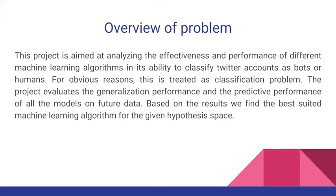The overview of the problem: this project is aimed at analyzing the effectiveness and the performance of different machine learning algorithms in their ability to classify Twitter accounts as bots or humans. For obvious reasons this is treated as a classification problem. The project evaluates the generalization and predictive performance of all models on future data, and based on the results we find the best suited machine learning algorithm for a given hypothesis space.